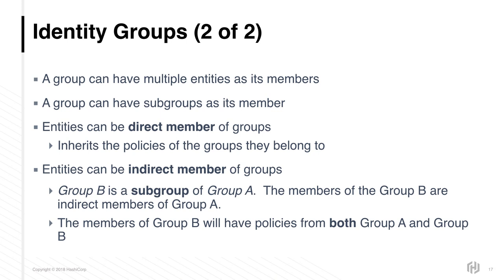Similarly to entities, groups can be used to assign policies and metadata. Groups can contain direct entity members and can also contain other groups. This allows for major enhancements to automation by using identity groups to quickly and easily grant access to secrets and functionality within Vault.